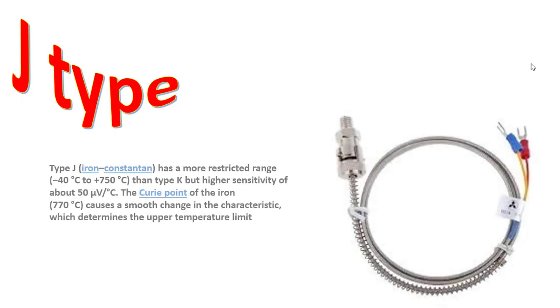Type J has a more restricted range of -40°C to +750°C than Type K, but has a sensitivity of about 50 µV per °C. The Curie point of iron at 770°C causes a smooth change in the characteristic, which determines the upper temperature limit.